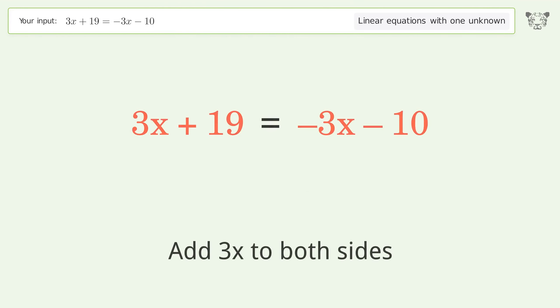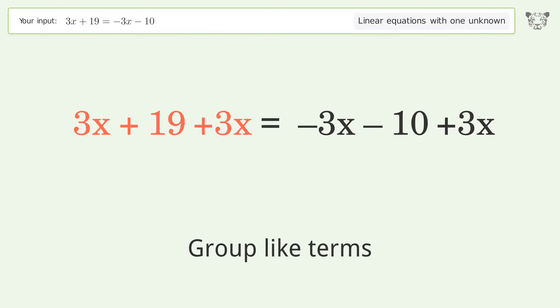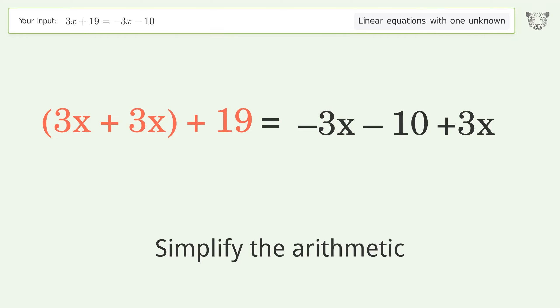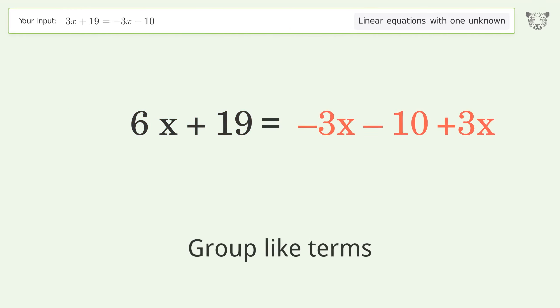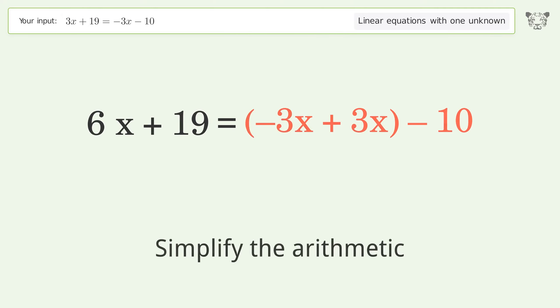Add 3x to both sides. Group like terms and simplify the arithmetic.